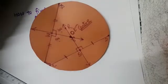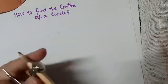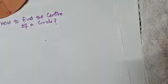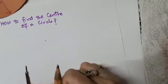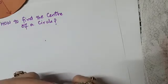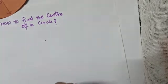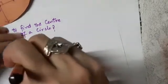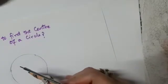We can also do this using construction. I have taken a compass and a pencil. First, let me align the tip of the pencil with the compass, and now I am going to draw a circle.